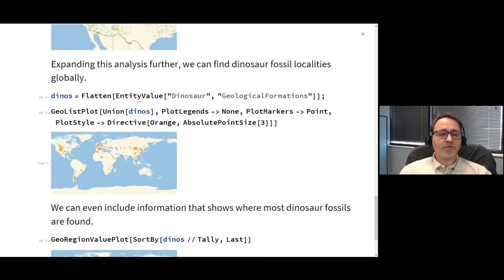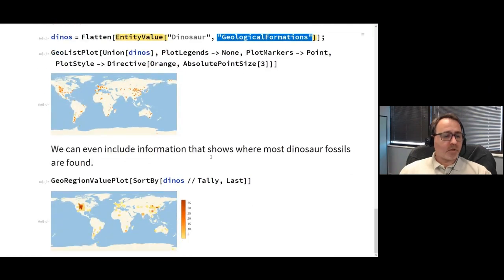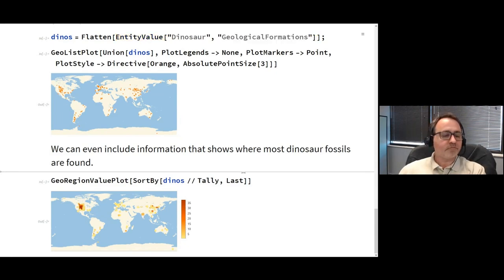You can query dinosaurs for what geological formations they belong to. T-Rex belongs in all these different formations, and you can plot where those formations are found with GeoListPlot. You can see they're all basically found in the United States, some in Canada, but Montana, the Dakotas, all that area. The Hell's Creek Formation is one I've heard of. If you want to find T-Rex fossils, these are where they've typically been found. You can go further and ask for all dinosaurs and all formations. Here I've plotted a dot on the world showing all the places where known dinosaurs have been found. Notice they're all on land. Dinosaurs are all land animals.